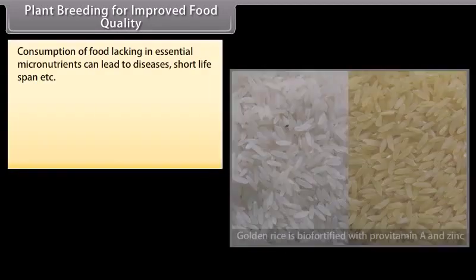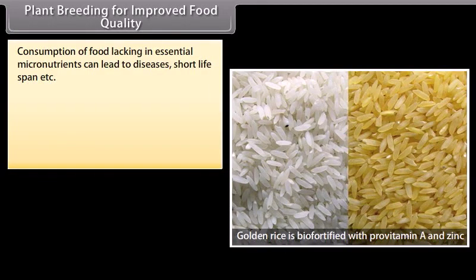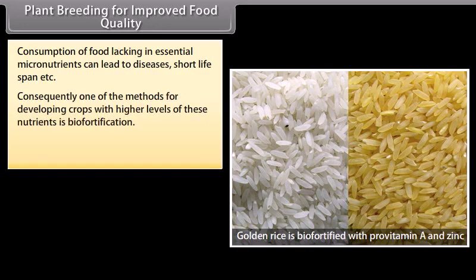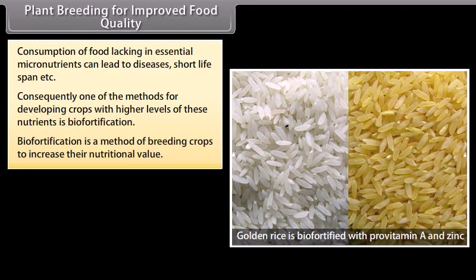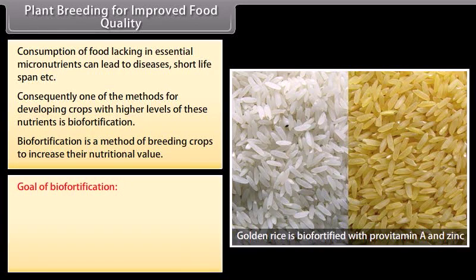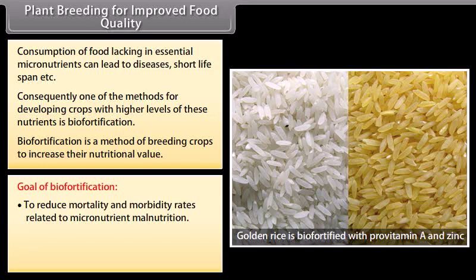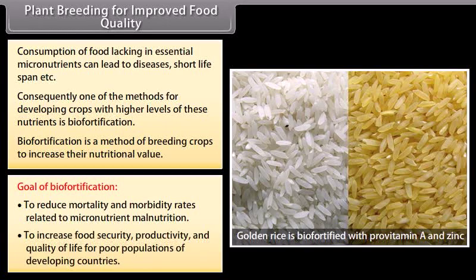Plant breeding for improved food quality: consumption of food lacking in essential micronutrients can lead to diseases and short life span. One method for developing crops with higher levels of nutrients is biofortification. Biofortification is a method of breeding crops to increase their nutritional value. The goal of biofortification is to reduce mortality and morbidity rates related to micronutrient malnutrition, and to increase food security, productivity and quality of life for poor populations of developing countries.